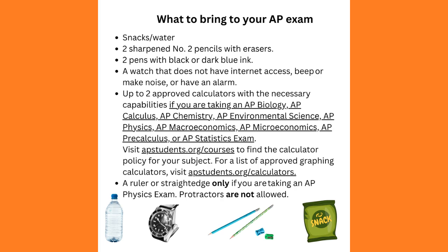You can also bring up to two approved calculators with the necessary capabilities if you're taking AP Biology, Calculus, Chemistry, Environmental Science, Physics, Macroeconomics, Pre-Calculus, or Statistics. You can check online to see which kind of calculator you can use, but your AP teachers for these courses will also know. You may also bring a ruler or straight edge if you're taking AP Physics. Protractors are not allowed for these exams.